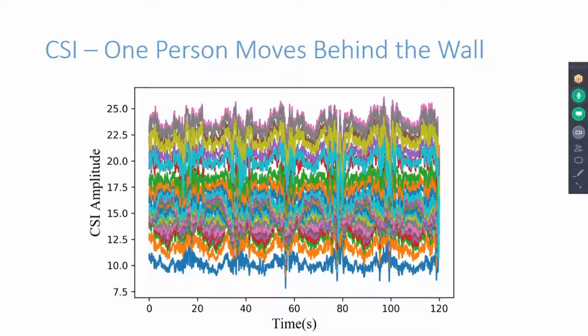Whenever a person starts movement behind the wall, fluctuations are observed in CSI data. CSI shown in this graph was obtained when there was only one person moving behind the wall.